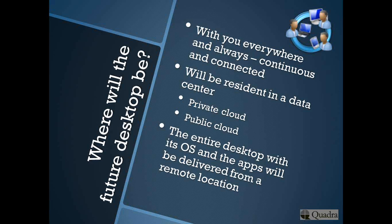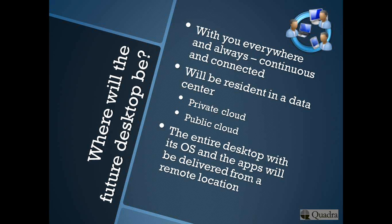As and when you require, you will be able to pull those applications and data from the cloud. Private cloud and public cloud are two different ways by which cloud technology is being delivered. Private cloud is the entity where the data center in an enterprise has got all its servers virtualized, and the storage and the applications are all virtualized. As and when a desktop requires or sends a request for an application, it can get the application from the data center, and the application can run on the desktop.